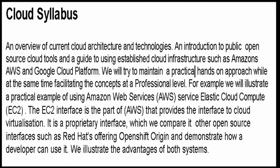The EC2 interface is the part of AWS that provides an interface to Amazon's cloud virtualization technology. It is a proprietary interface, and we compare it to other open source interfaces, such as Red Hat's offering, OpenShift Origin, which is an open source virtualization stack you can download and install on your computer to develop your own applications and later upload to OpenShift.